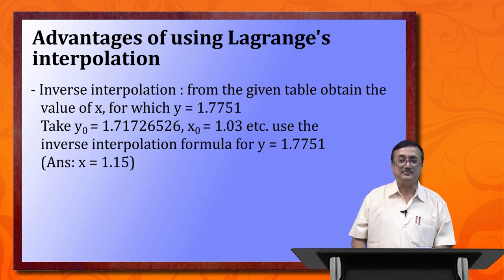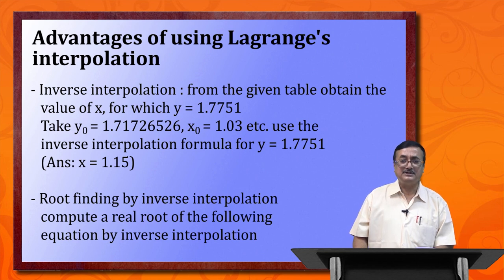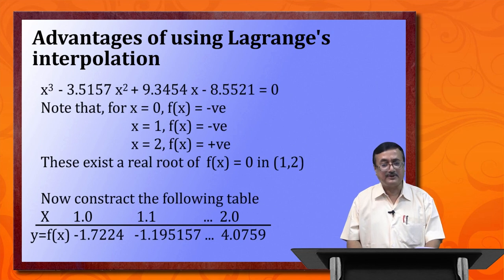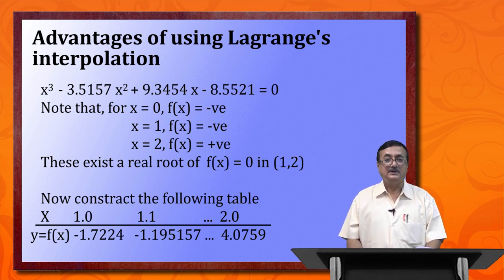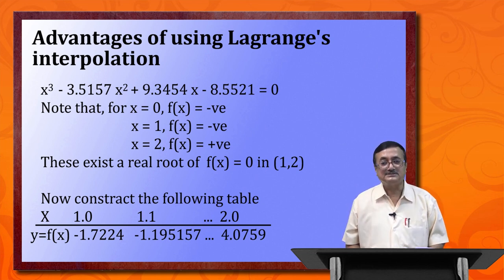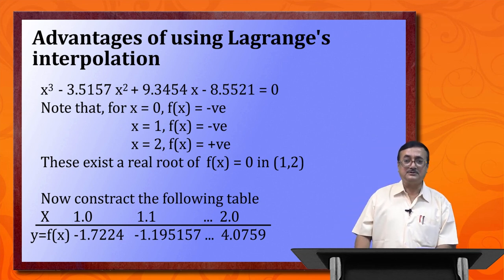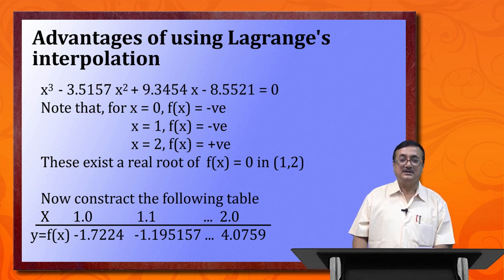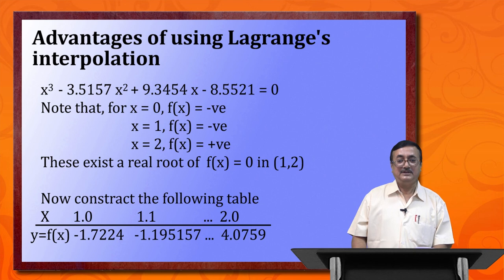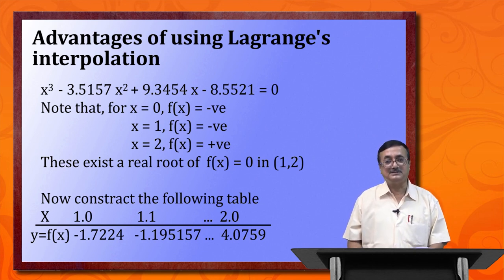Another important application of Lagrange's interpolation formula is root finding of an algebraic equation. Consider the equation x³ - 3.5157x² + 9.3454x - 8.5521 = 0. We are required to find a real root. We assume that f(x) is a well-behaved function, free of oscillations near the root. If f(x_i) * f(x_{i+1}) is positive, there is no root between them; if it is negative, there is exactly one real root between them.